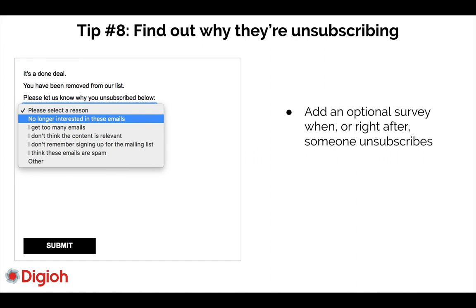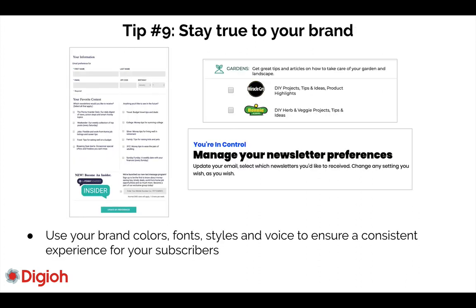Tip number eight: stay true to your brand. Use your brand colors, keep your fonts intact, and make the preference center look like it's part of your website — not the email marketing system's website. Use all the same verbiage you use on your site. It is an extension of your marketing brand, so stay true to it. Custom fonts, custom colors, logos — all of it should feel like part of your site.